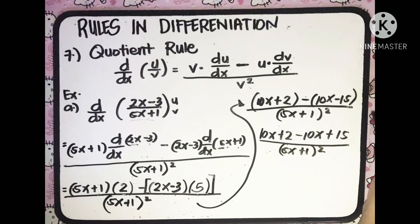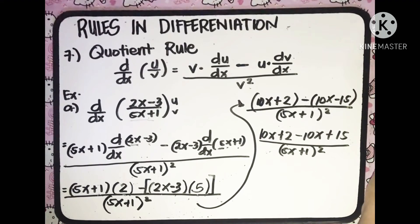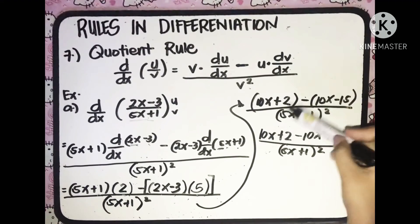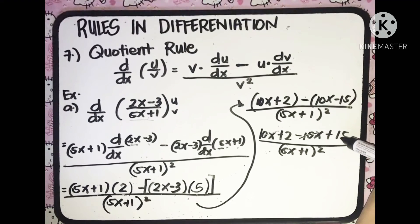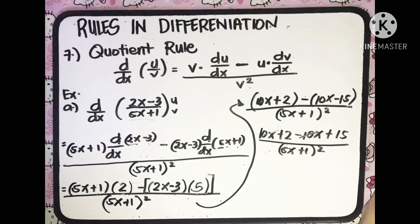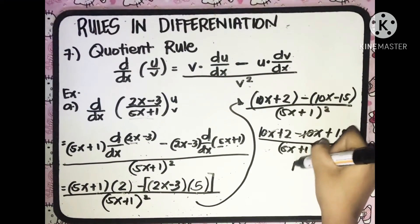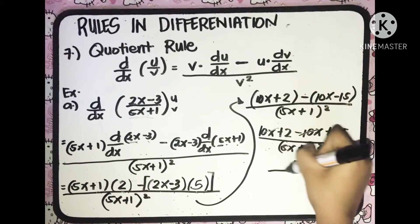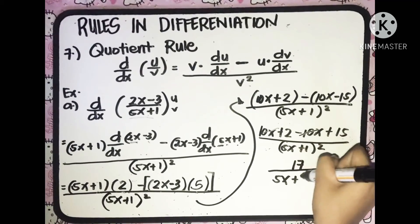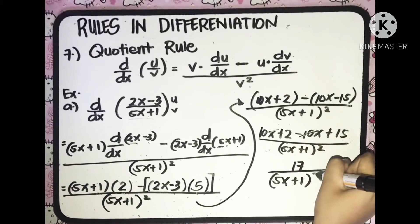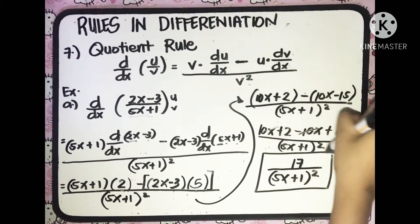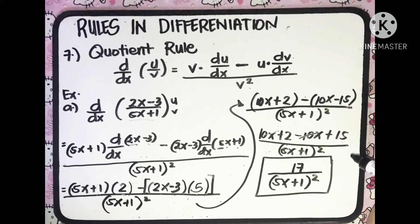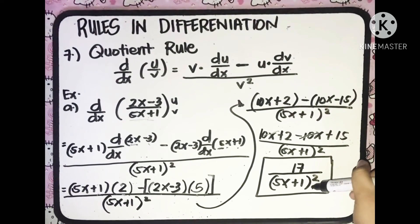Then we'll combine like terms. We have 10x minus 10x, which is equal to 0. And then we have positive 15 and positive 2, which combine to equal 17. Then all over (5x plus 1) quantity raised to 2. And that is the derivative of the given function. You don't need to expand the denominator.